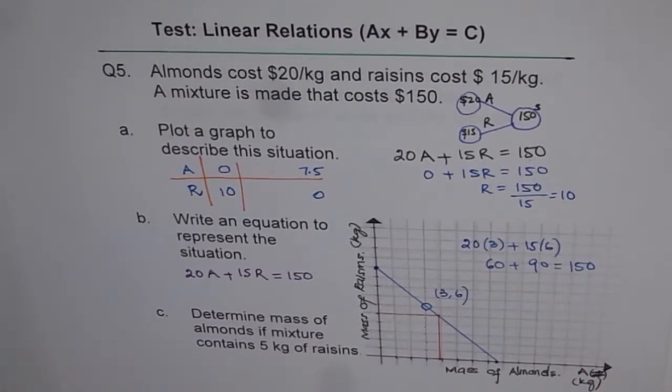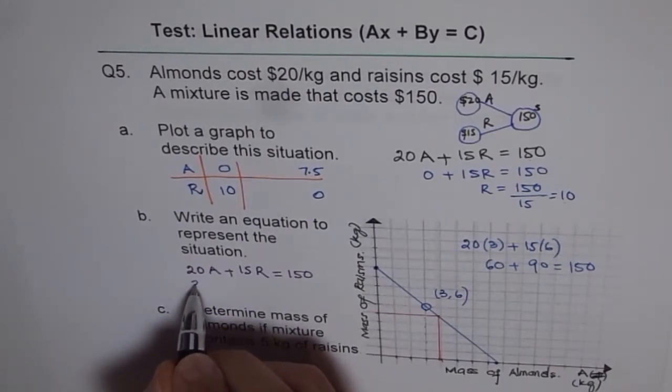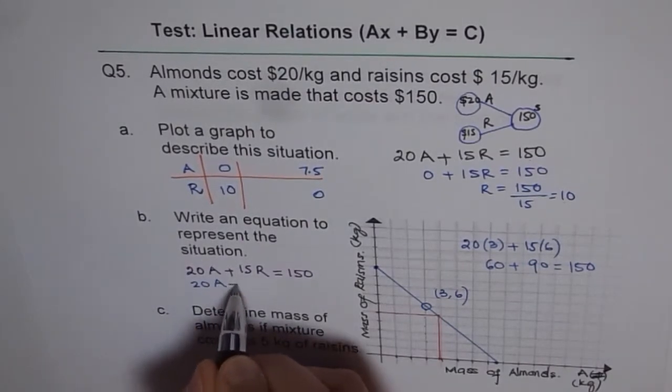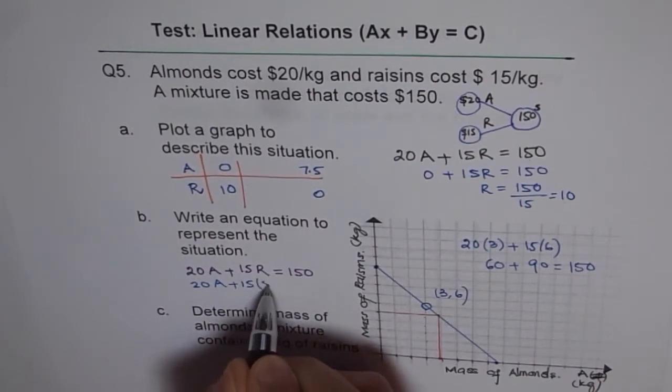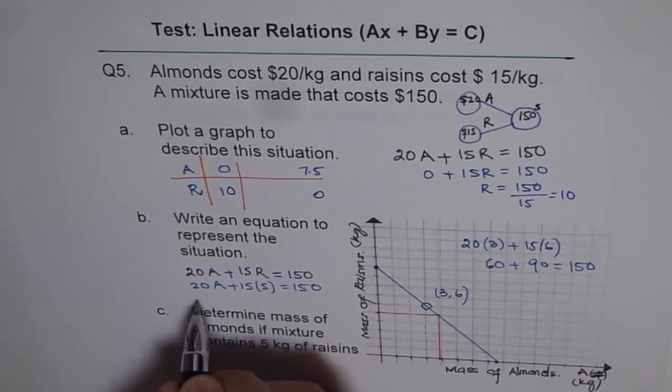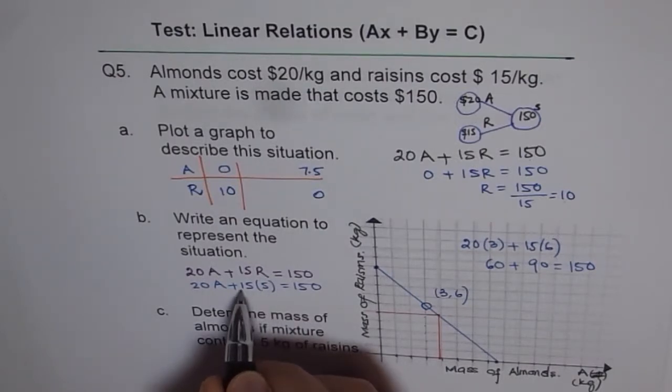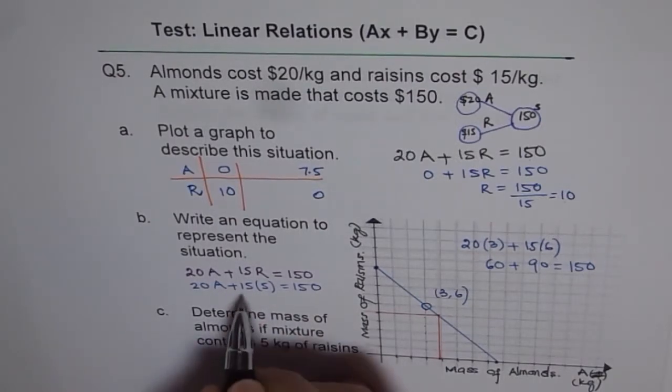Now we'll try to solve it algebraically and see what we get. So algebraically we'll replace R with 5 in our equation and calculate the mass A of almonds. So we have 20 times A plus 15 times 5 equals 150. Now that gives us 15 times 5 is 75. 5 times 5 is 25 and 5 times 1 is 5 plus 2, 75.